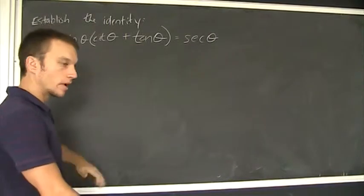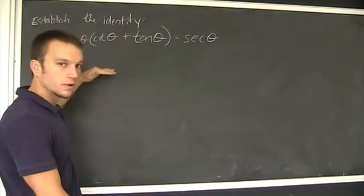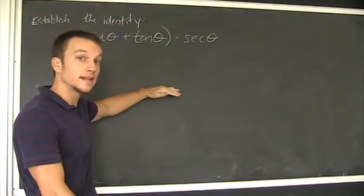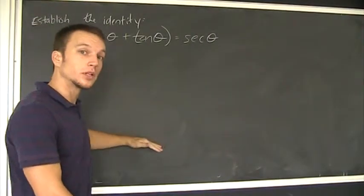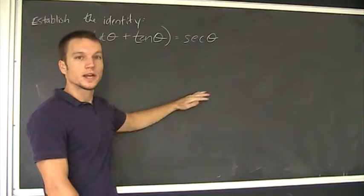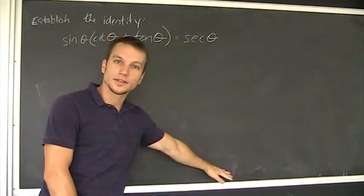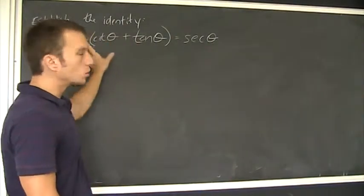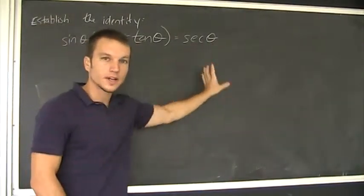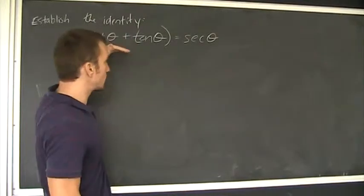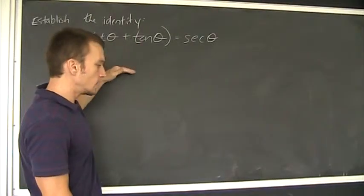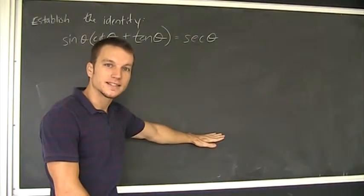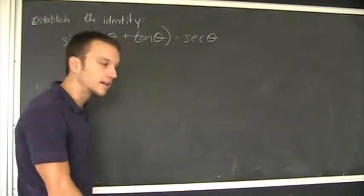So we need to establish this identity. The goal here is to start with one side, apply some identities we already know to be true, maybe some algebra, and end up with the other side. We don't want to do work on both sides of the equation. Start with this side, do some work, end up with the other side. Then we establish that identity.